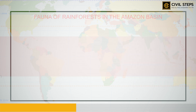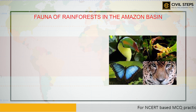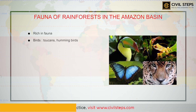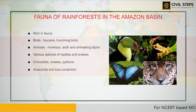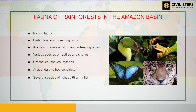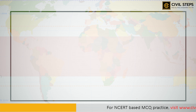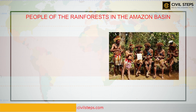The rainforest is rich in fauna. Birds such as toucans and hummingbirds are visible here. Animals like monkeys, sloth, and anteaters are found here. Various species of reptiles and snakes also thrive — crocodiles, pythons, anaconda, and boa constrictors are some of these species. The basin is also home to thousands of species of insects, and several species of fish including the flesh-eating piranha are found in the river.